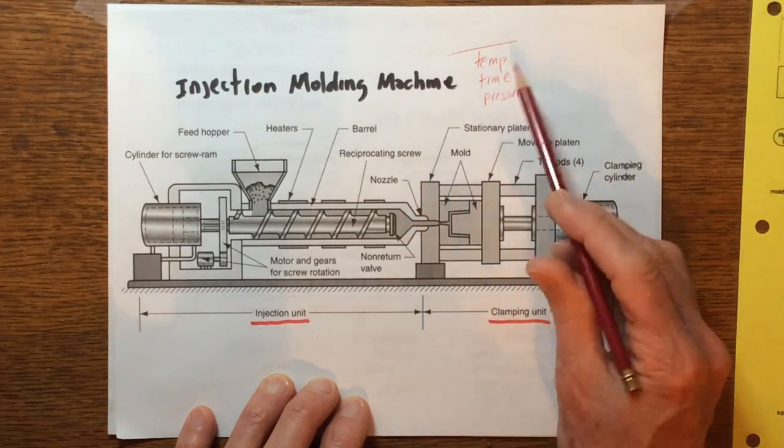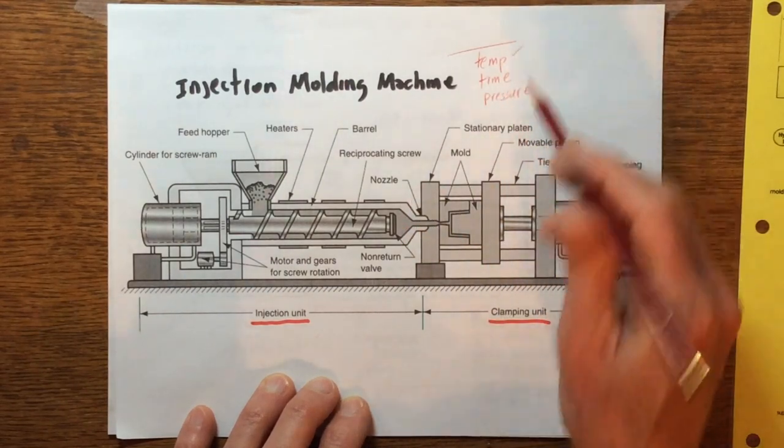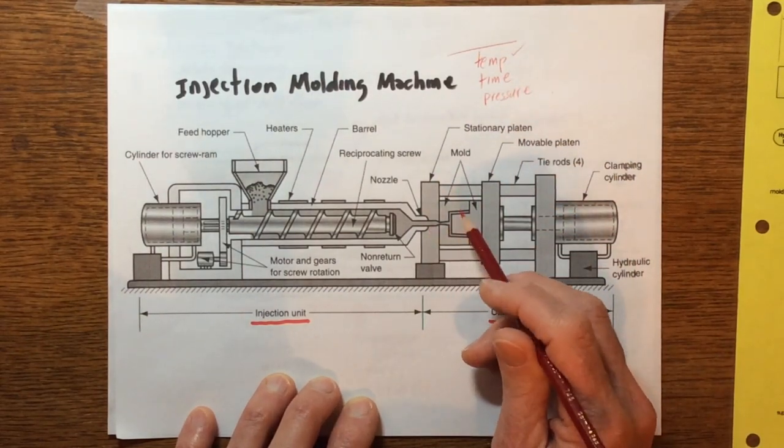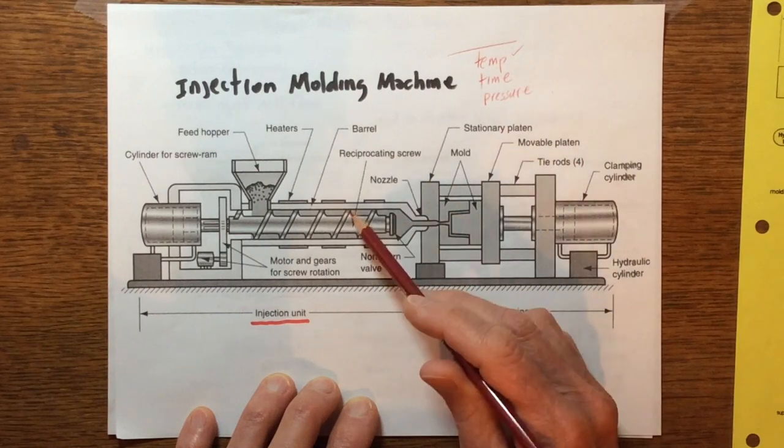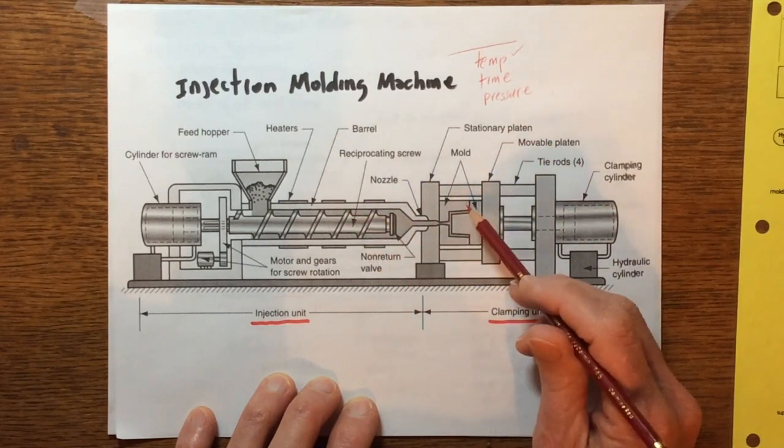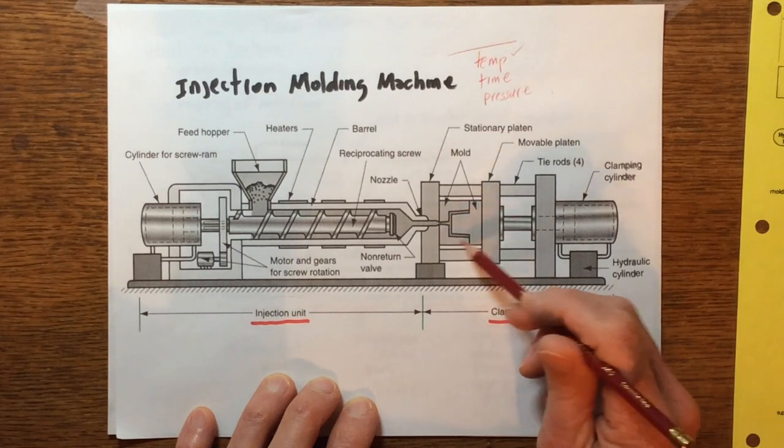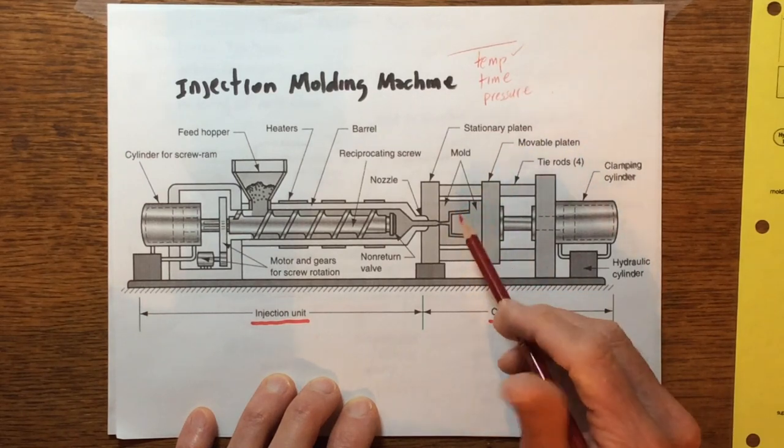We don't want it too cool because then the viscosity is too high and it's difficult to push that high viscosity polymer into these fine cavities, and then of course you may not melt the whole thing. So temperature is important. Time is important, time is extremely important.